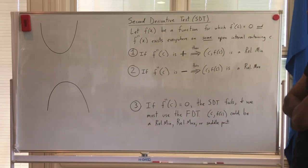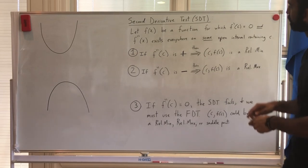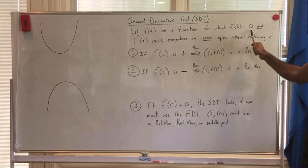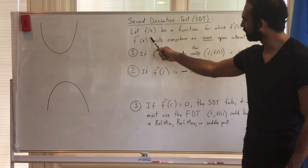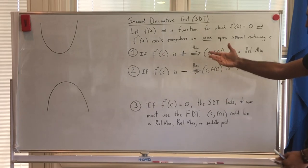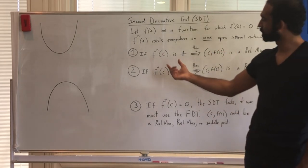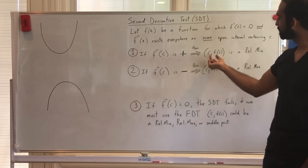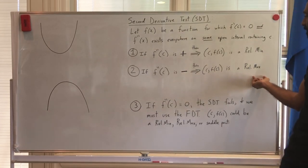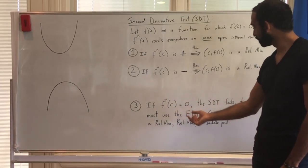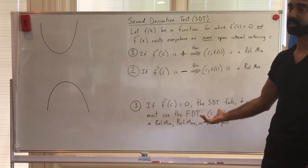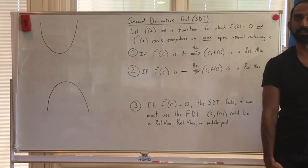Let's look at the statement of what's called the second derivative test. We have a function for which f prime of c equals zero — that's a critical number — and the second derivative exists everywhere on some open interval containing c. If the second derivative is positive, then c, f of c is a relative min. If f double prime of c is negative, then that's a relative max. And if f double prime of c is zero, the SDT fails, and we use the first derivative test to determine whether it's a relative min, relative max, or neither.